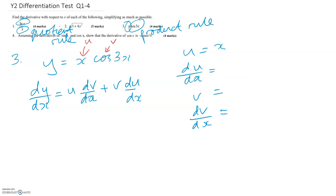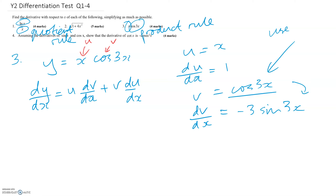Let's call x as u and cos(3x) as v. So u is x and du/dx is 1. v is cos(3x) and dv/dx is minus 3·sin(3x). You get that from the chain rule used in the previous question — you differentiate 3x, put it at the front, and going from cos to sin introduces the negative.